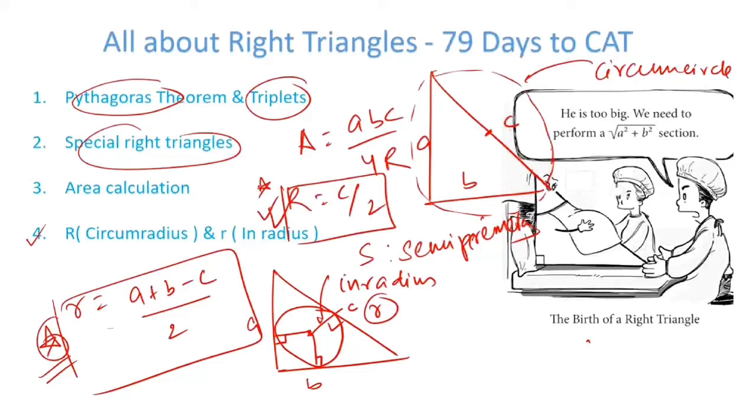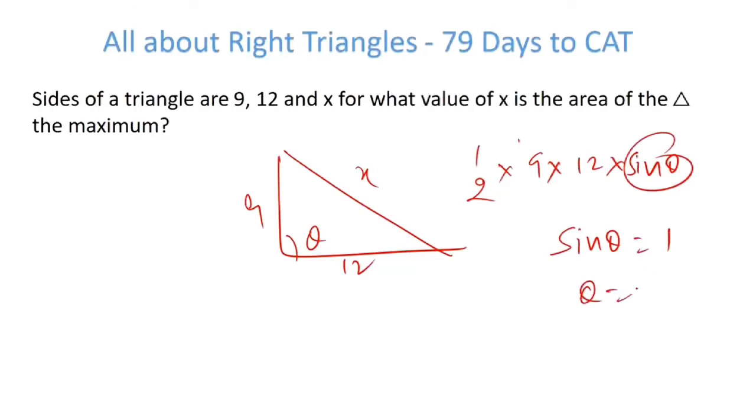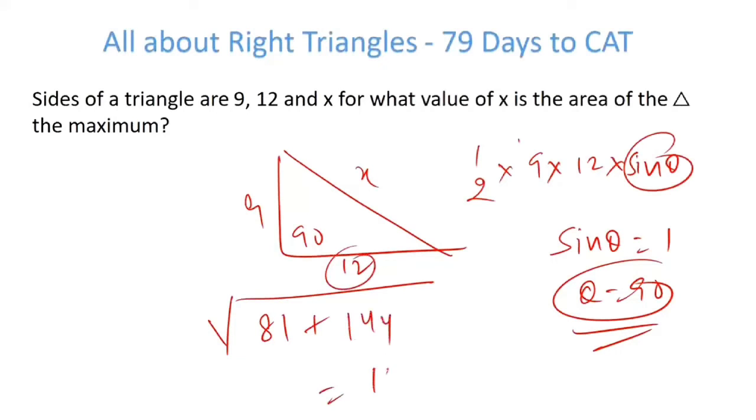Let's apply these concepts in a few questions that have been part of CAT in the previous year. Sides of a triangle are 9, 12 and x. For what value of x is the area of the triangle maximum? Now this is 9, this is 12, this is x. Area can be given as half into 9 into 12. Let's say this angle is theta, so sine theta. This will be maximum when sine theta is equal to 1, theta is equal to 90. So if theta is 90, then what's the value of x? Just use Pythagoras theorem: root over 81 plus 144 becomes 15. So the value of x is 15.